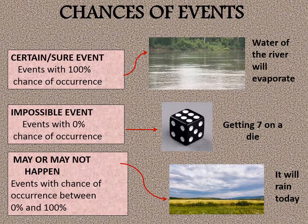The next category is an impossible event — an event with zero percent chance of occurrence that cannot occur at all. If we have a die with numbers marked from 1 to 6, it is impossible to get 7, so that is an impossible event. The third category is events which may or may not happen — for example, saying it will rain today: I cannot be sure it will definitely rain, nor can I say it is impossible. Such events have chances of occurrence between 0% and 100%.